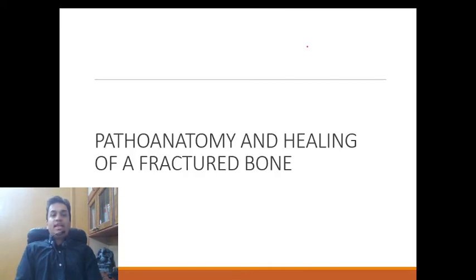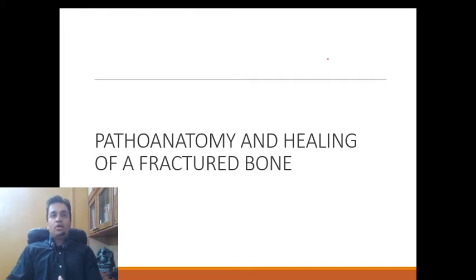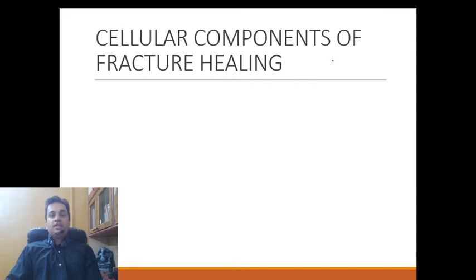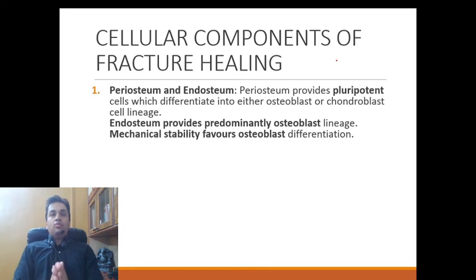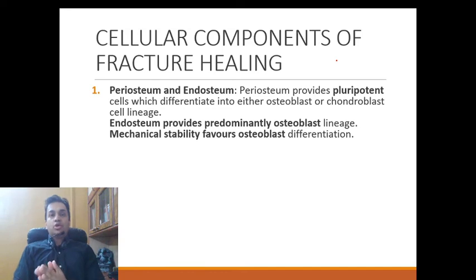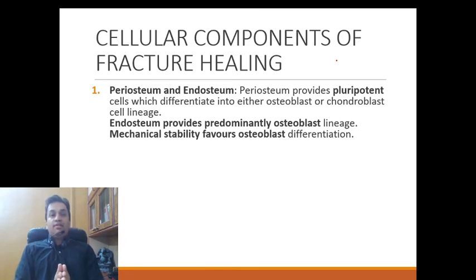Moving on to pathoanatomy and healing of a fractured bone. First, the cellular components of fracture healing. The outermost layer of the bone is the periosteum and the innermost is the endosteum. Both layers have cells which can differentiate into either osteoblast lineage or chondroblast lineage depending on mechanical and local requirements — they are pluripotent cells. The periosteum provides a good mixture of both, whereas the endosteum predominantly gives osteoblast lineage.